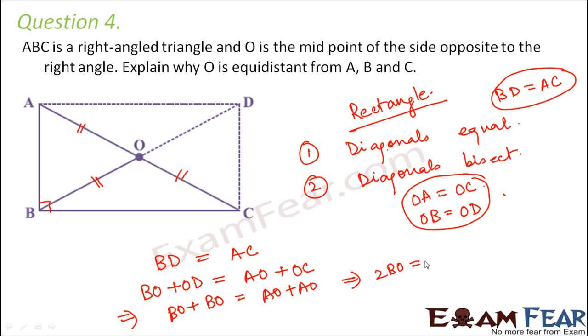So from this we can write 2BO is equal to 2AO, or we can say BO is equal to AO. So from here we have proved that BO is equal to AO, and from here we saw that AO is equal to CO. Therefore we can say that all these three are equal, and therefore O is equidistant from points A, B, and C.